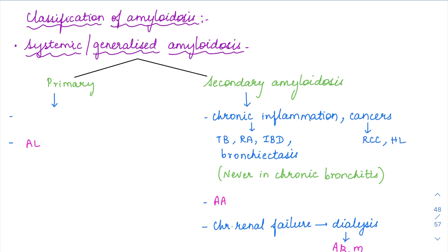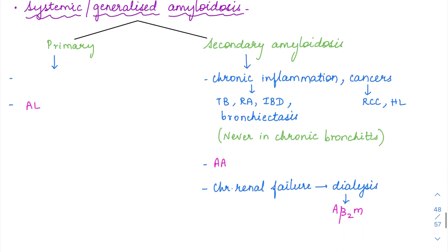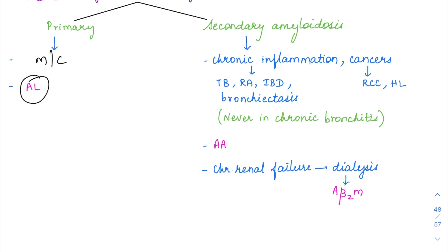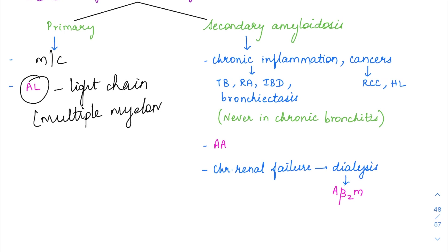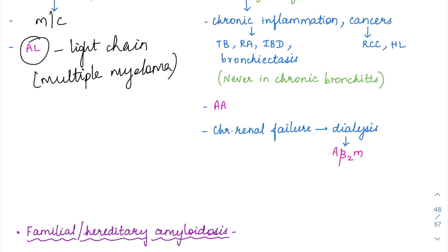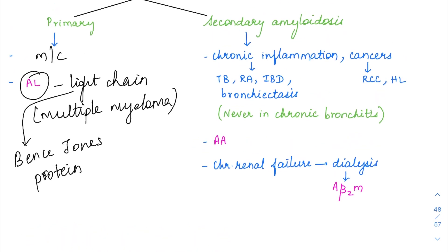Amyloidosis is classified into systemic, familial, and localized types. Under systemic or generalized amyloidosis there are two subtypes: primary and secondary. Primary amyloidosis is the most common type, and here the amyloid is AL — amyloid light chain. There is excess light chain which is misfolded, seen in multiple myeloma. This amyloid light chain gets deposited in various organs, especially the kidney, and is associated with the characteristic finding of Bence-Jones protein.